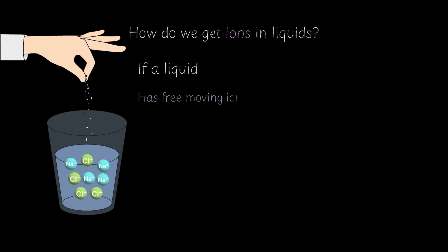So if a liquid has free moving ions, it conducts electricity and it's a good conductor. If it doesn't, it's a poor conductor. Now, let's test a few everyday liquids. You can even predict before I say it whether it's a good conductor or a poor conductor.